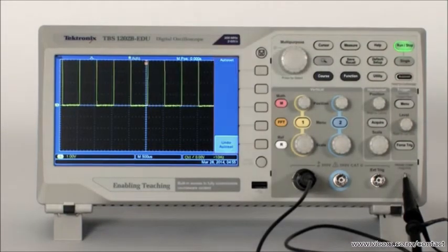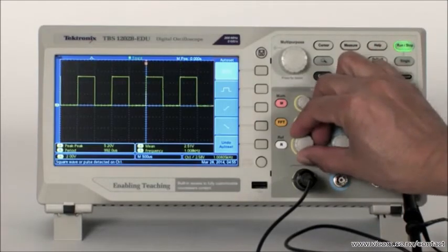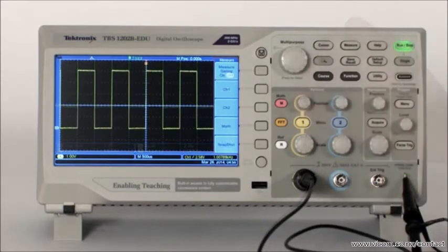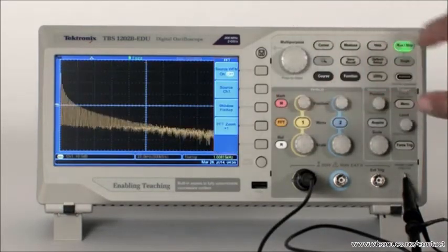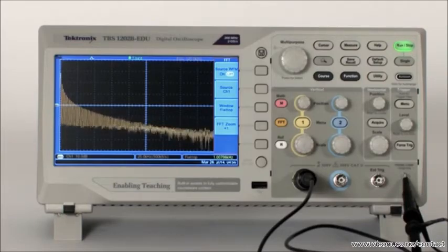First, we'll get a stable waveform by using the autoset function and then set the vertical scale to use as much of the screen as possible. The FFT function can be quickly accessed using the FFT button on the front panel. Pressing the button opens the FFT screen and displays the FFT setup menu on the right.